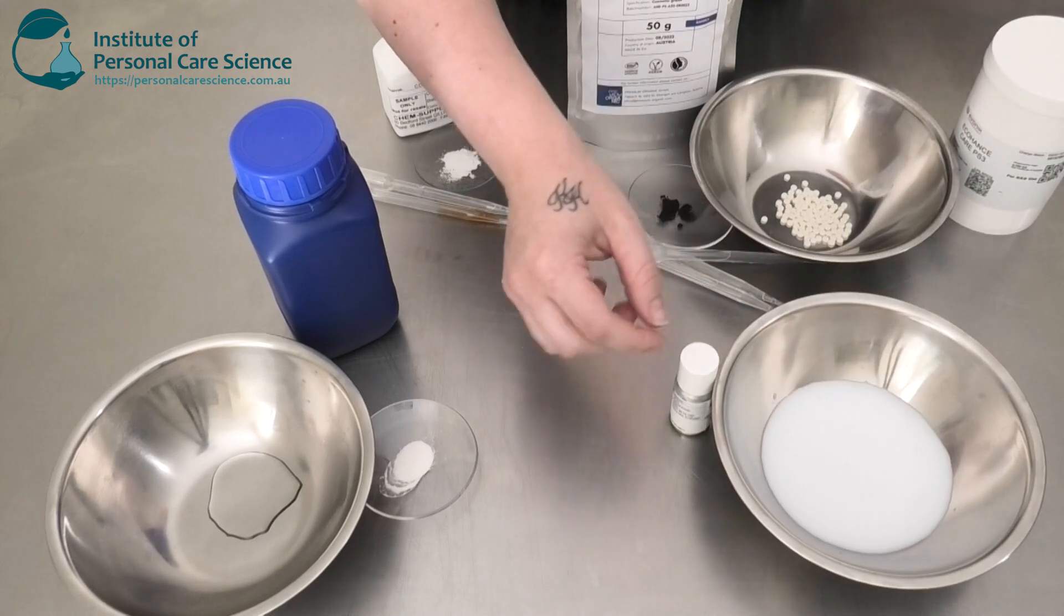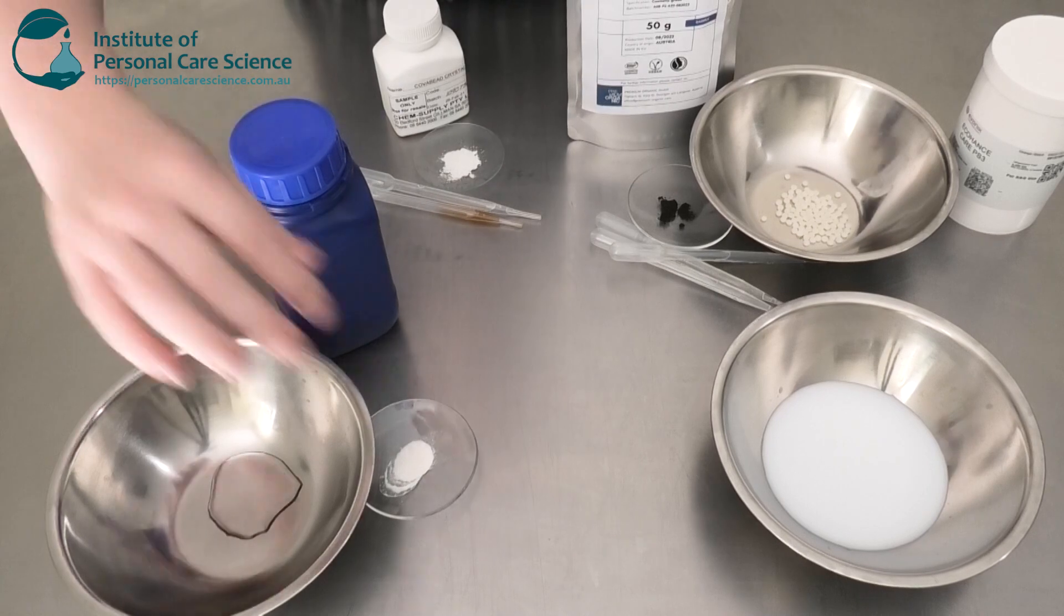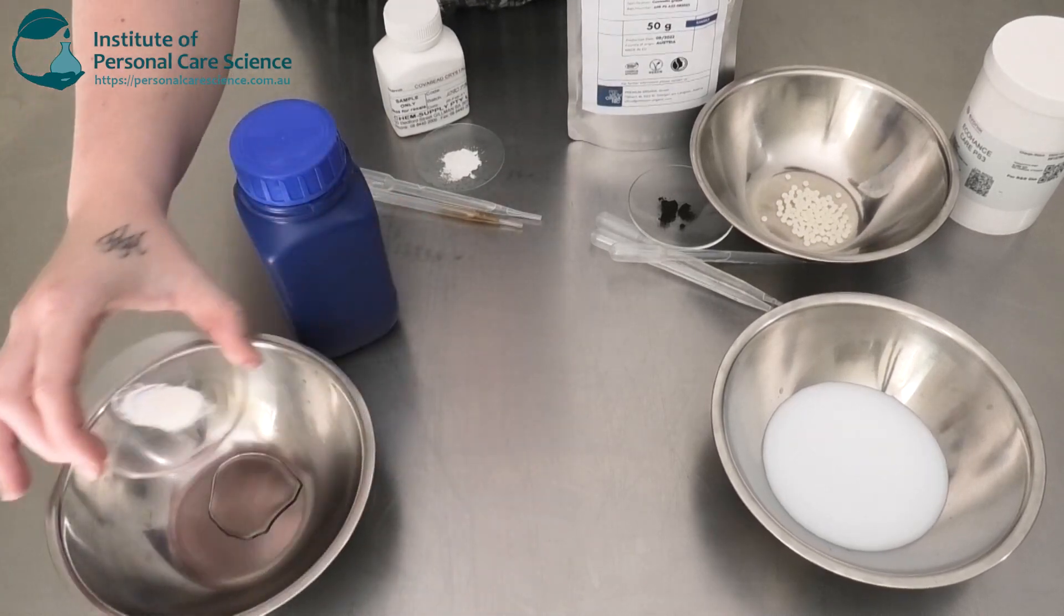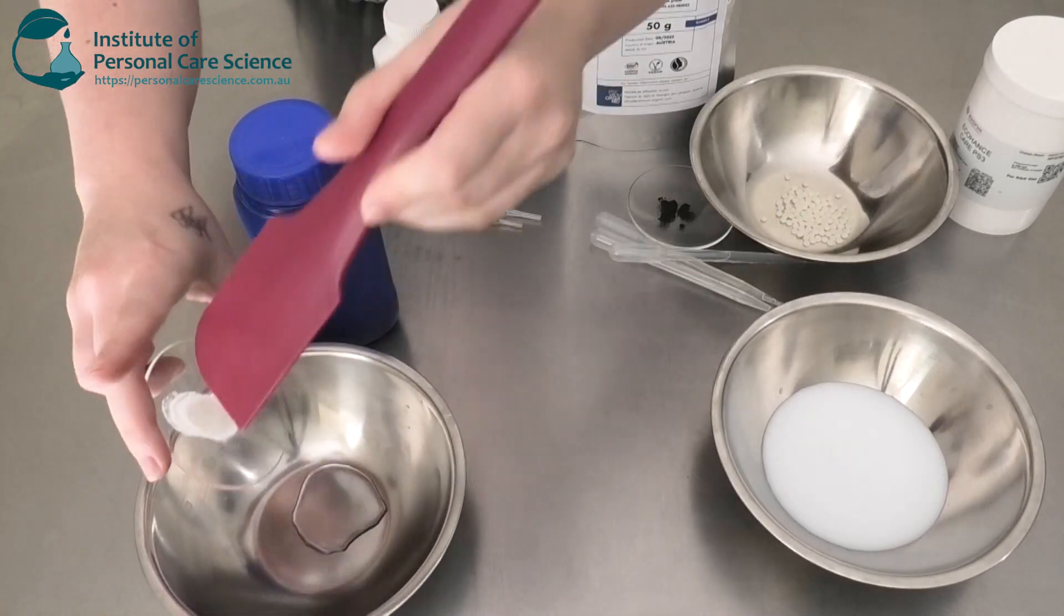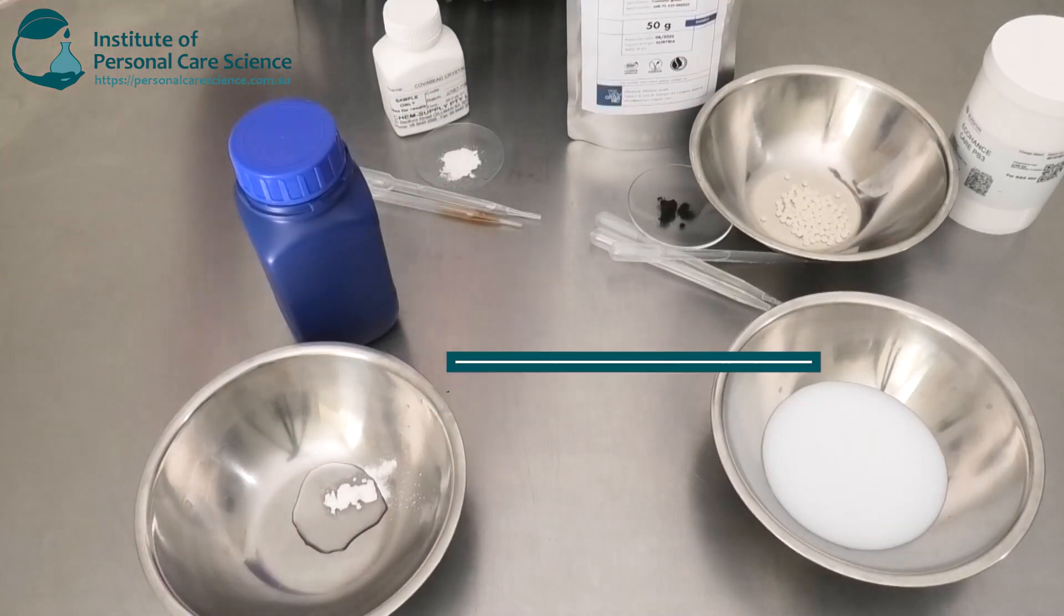Look how easy that is to go into your formula, or into your water phase anyway. Now next to build my moisturizer, I'm going to be using some xanthan gum. Now this is the Verdescent xanthan, so this is a really nice grade of xanthan.